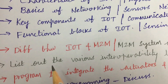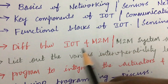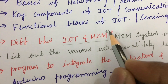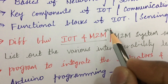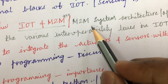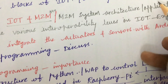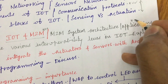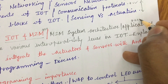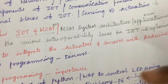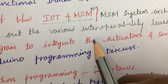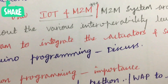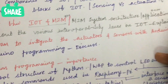The third question is all about the difference between IoT and M2M — this is also a very important and basic question. Later, M2M system architecture and applications is also a gunshot question which you can expect in the third question. Additionally, list out the various interoperability levels in IoT and explain.